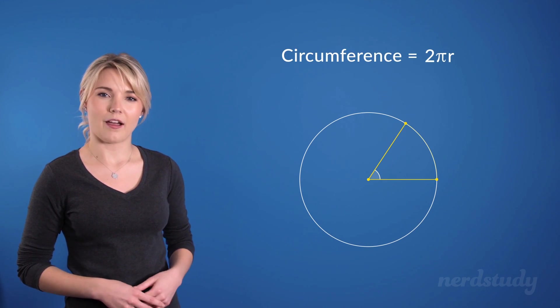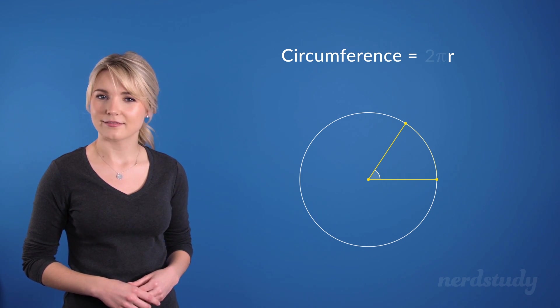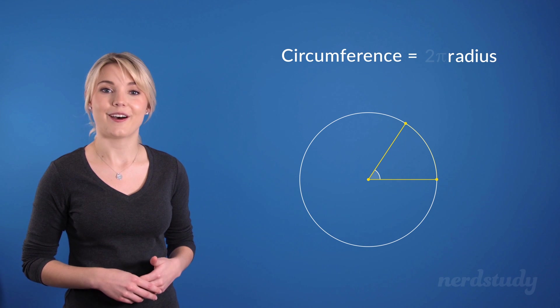Well, it would be 2 pi r, wouldn't it? Great. And what does that r stand for again? It stands for the radius of the circle.